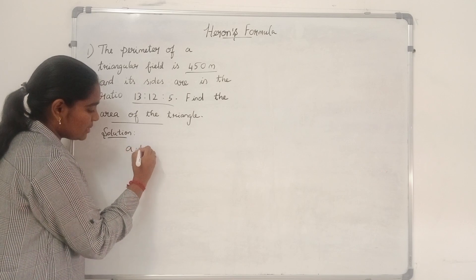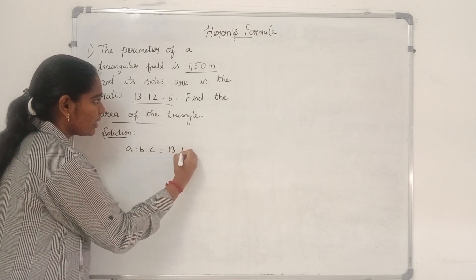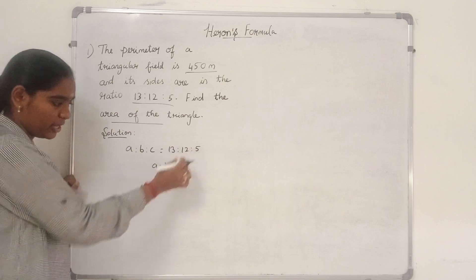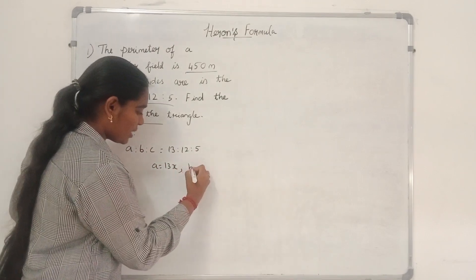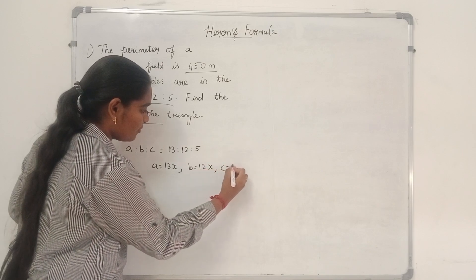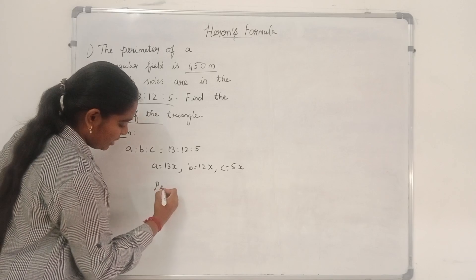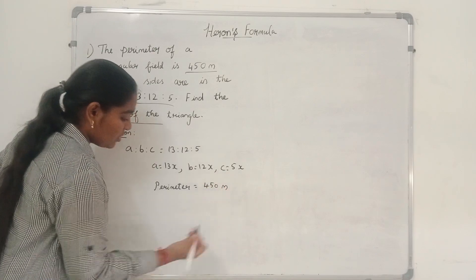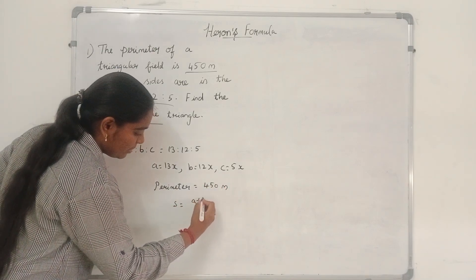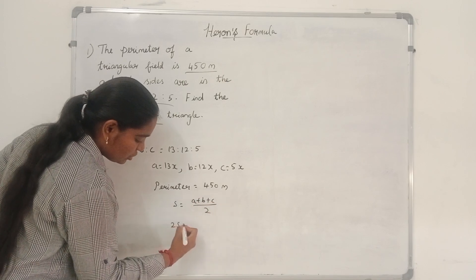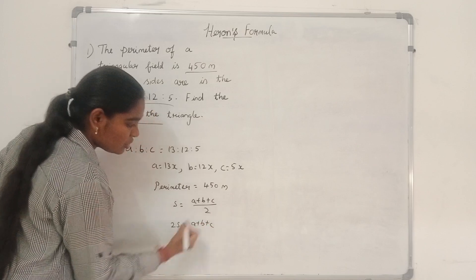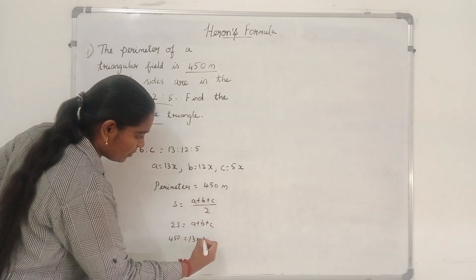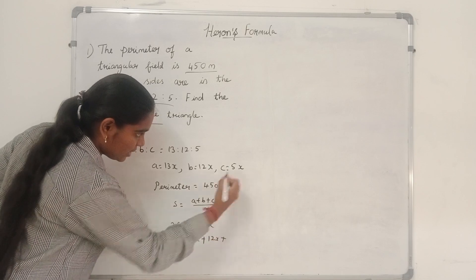The sides are a is to b is to c equal to 13 is to 12 is to 5. Then a will be equal to 13x because these are in ratio. So we have to write this in this form: b equal to 12x and c equal to 5x. Perimeter is given as 450 meters.